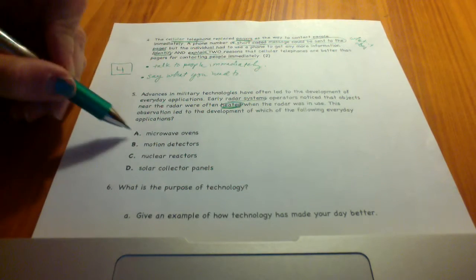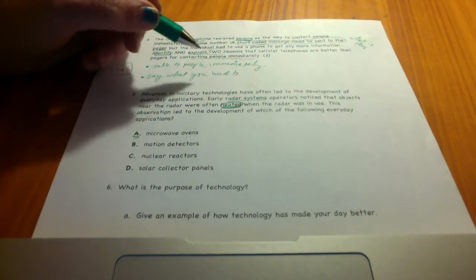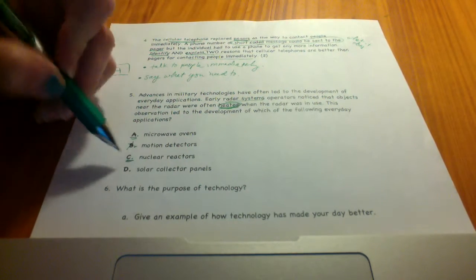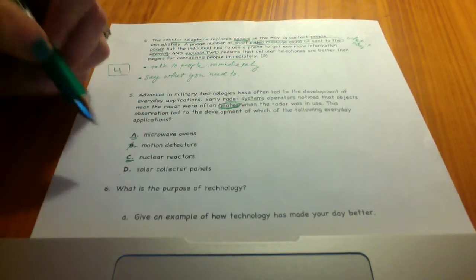If you take a look, we have microwave ovens, that is one thing. Motion detectors, those do not create heat. Nuclear reactors, oh, those kind of do. Solar collector panels.